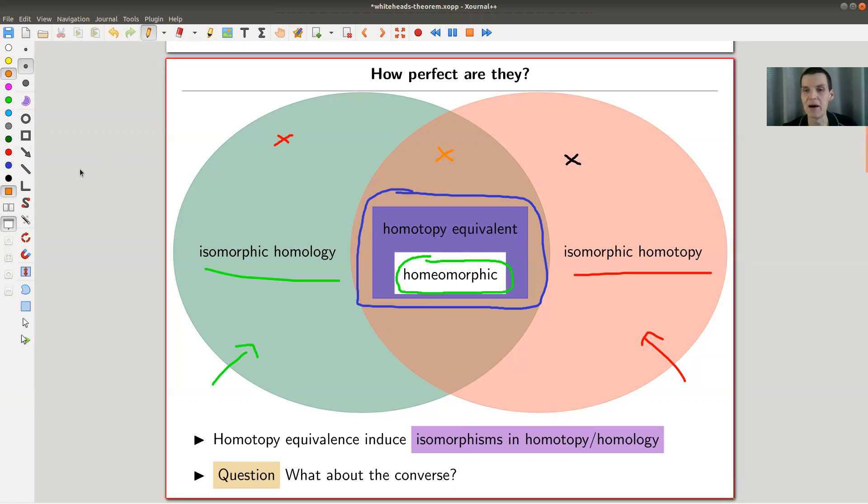So certainly the question that arises is that homotopy, for example, homotopy or homology induces a homotopy equivalence and induces isomorphisms in homology or homotopy. Of course, it's kind of the whole point. But to what extent is actually the converse true?